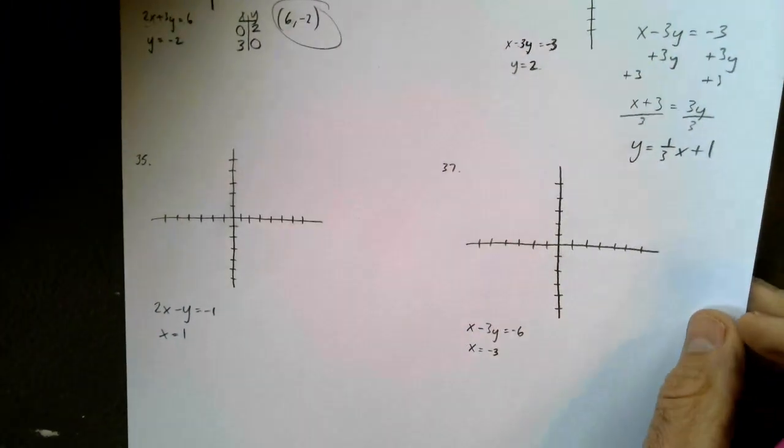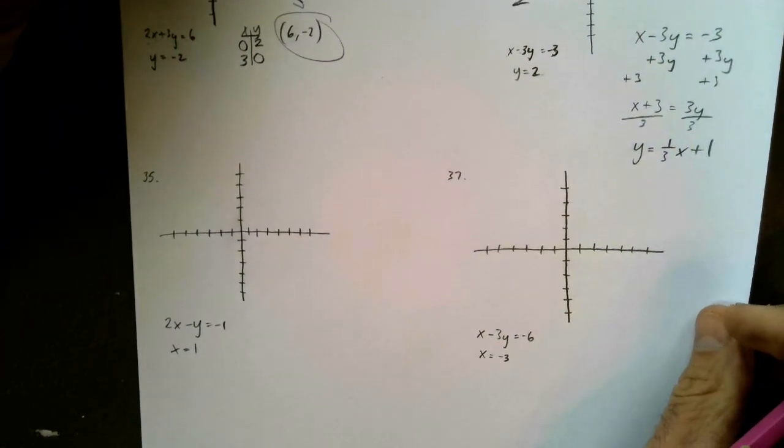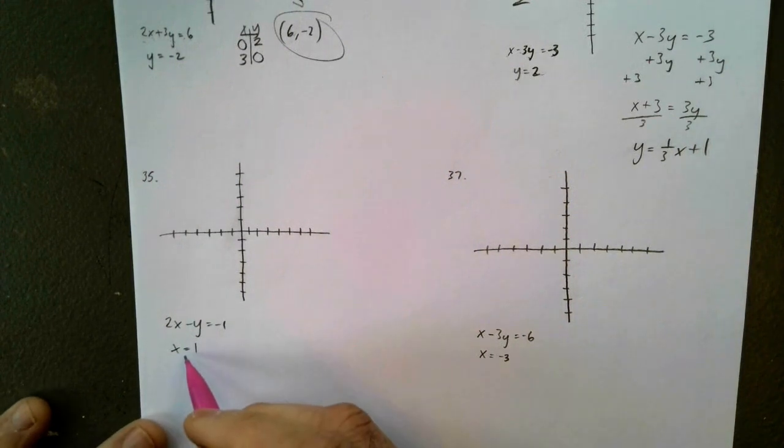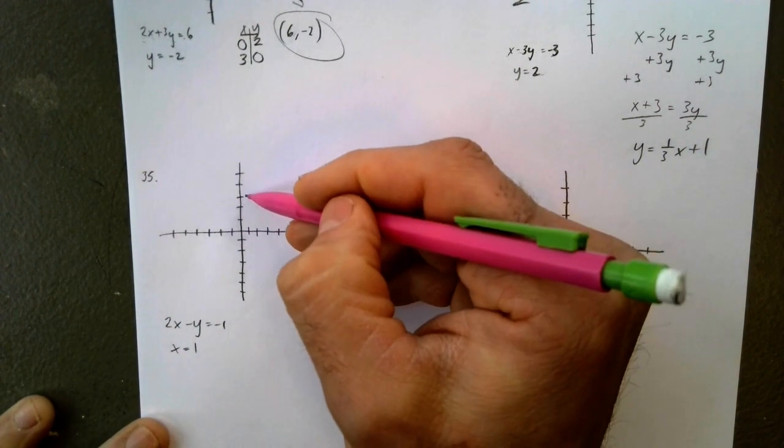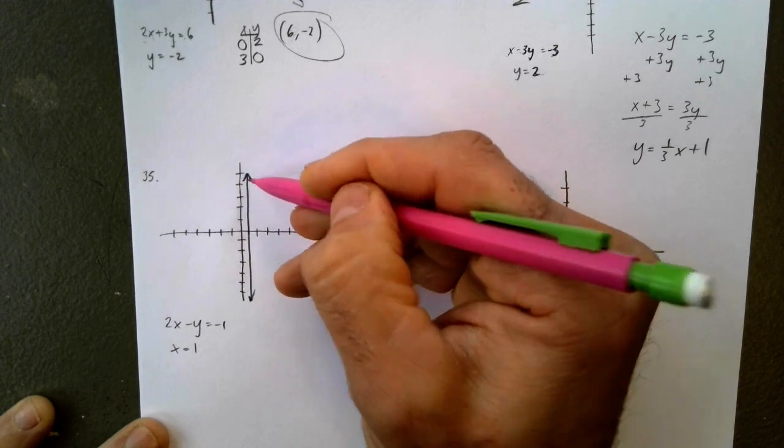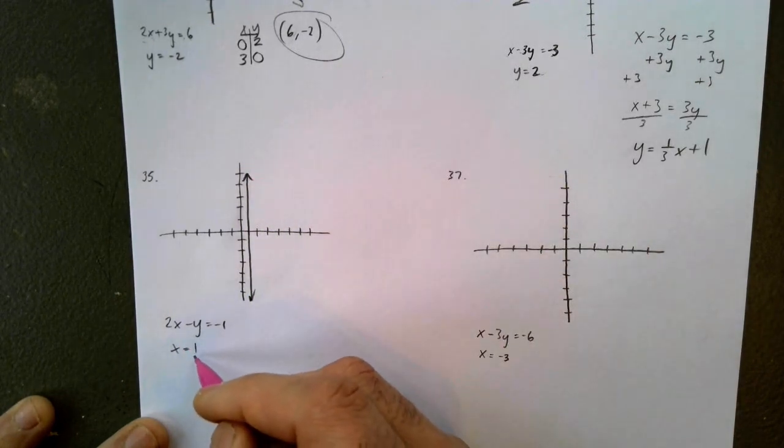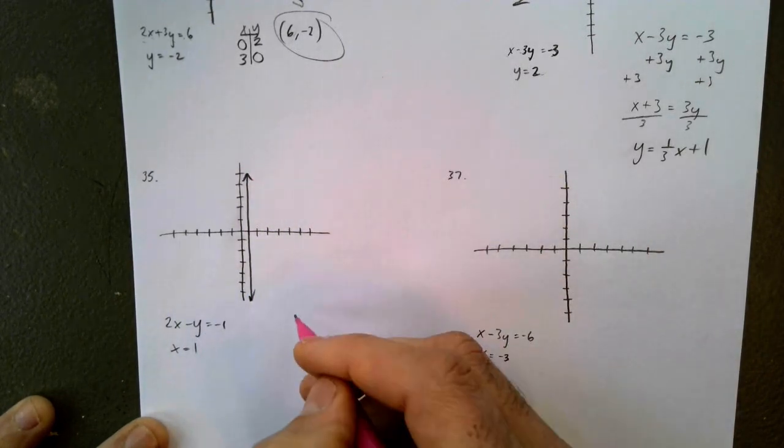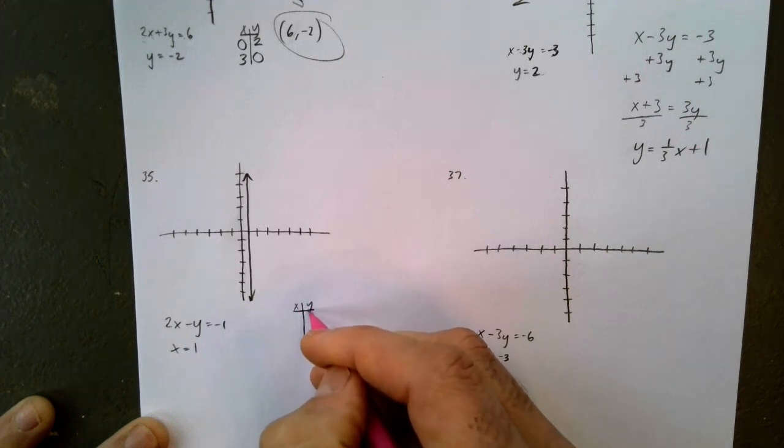35. Okay. This time, we're given a vertical line. x equals 1. I made that way too close. That's okay. All right. We graphed x equals 1. Now, I've got to graph 2x minus y equals negative 1. And I think I might try some intercepts on that.